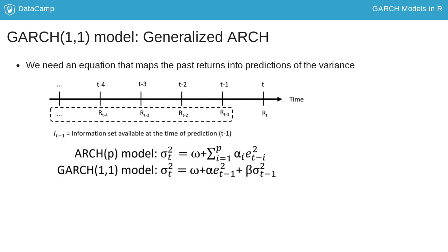You can see that under the GARCH model the predicted variance equals the parameter omega plus the parameter alpha multiplying the previous squared prediction error plus the parameter beta multiplying the previous variance prediction.